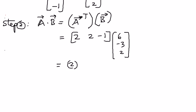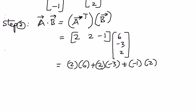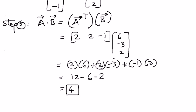Therefore, we can now perform the multiplication. This is going to be 2 times 6, plus 2 times negative 3, plus negative 1 times 2. When we simplify: 2 times 6 is 12, 2 times negative 3 is negative 6, and negative 1 times 2 is negative 2. So 12 minus 6 is 6, and 6 minus 2 equals 4. The dot product of these two vectors using matrices is equal to 4.